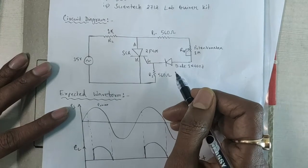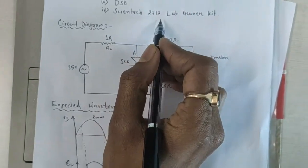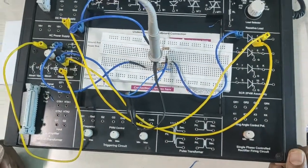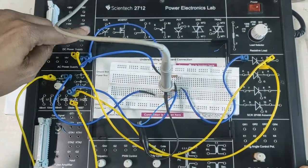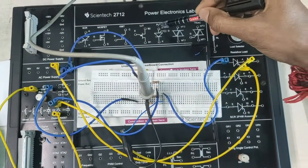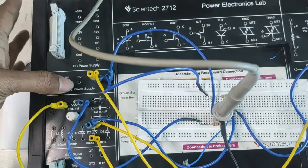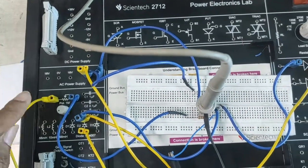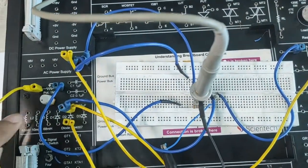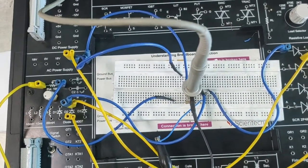This is the circuit diagram of R triggering. You can see this Syntec 2712 lab trainer kit here. Various components are there like SCR, MOSFET, IGBT, UJT, DIAC, PUT, TRIAC, DC supply, and AC supply. There is also a variable potentiometer of 1 Mega Ohm, capacitors, and diodes — diode 1N4007, which we will use in this experiment.